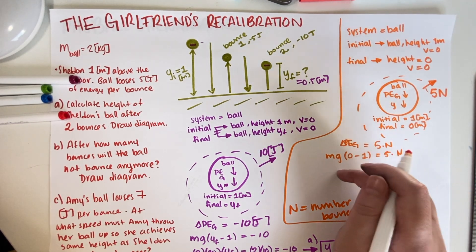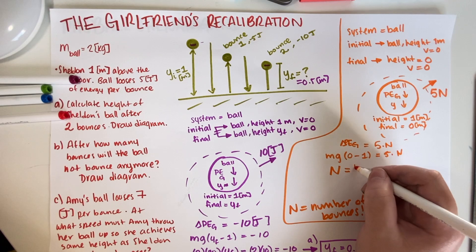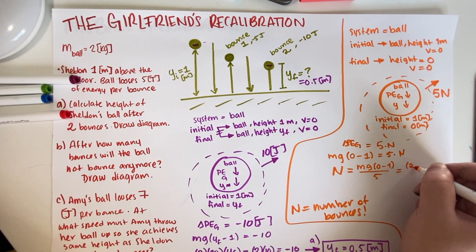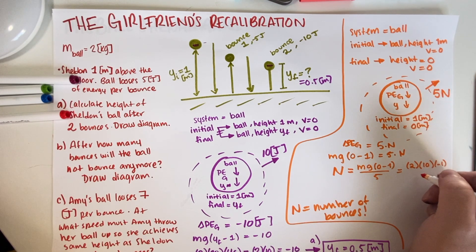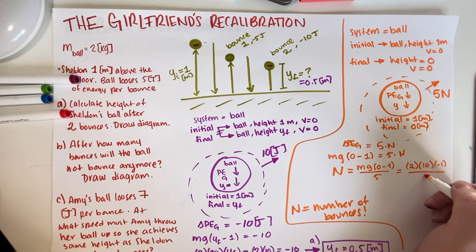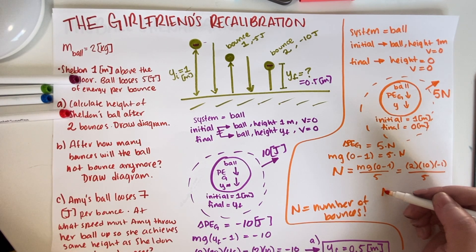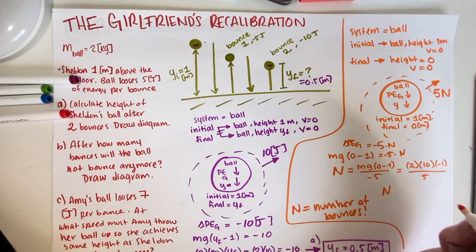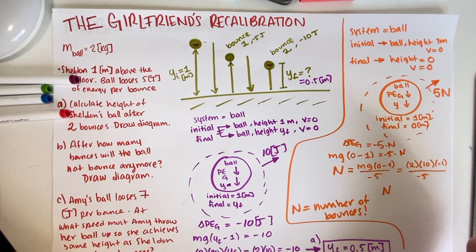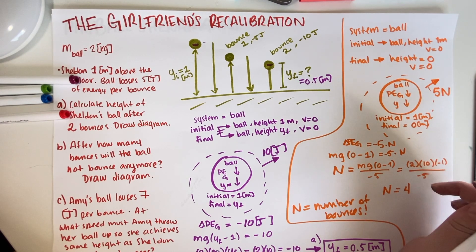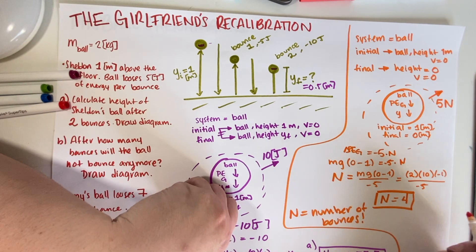So let's write the equation: ΔPE_gravitational equals −5N. So MG(Y_final − Y_initial) = −5N, where Y_final = 0 and Y_initial = 1. That gives us 2 × 10 × (−1) = −5N. Solving: −20 divided by −5 equals positive 4. So N equals 4 bounces. The negative sign appears because the energy is going out of the system, so when placed in the equation it becomes negative.